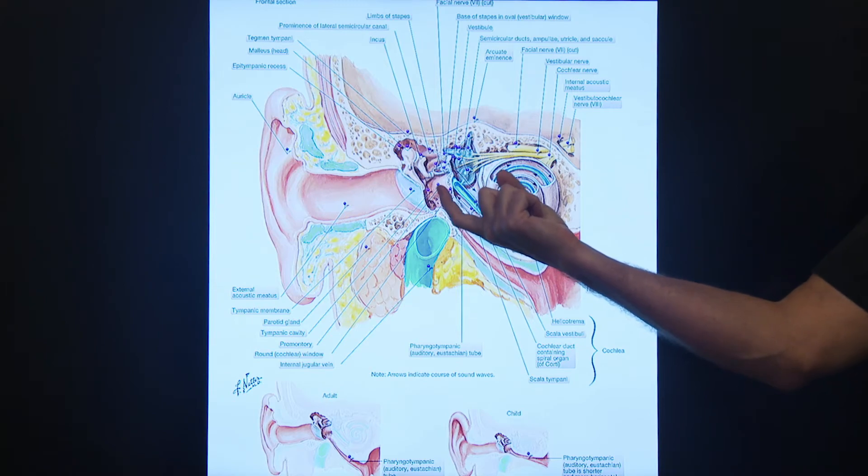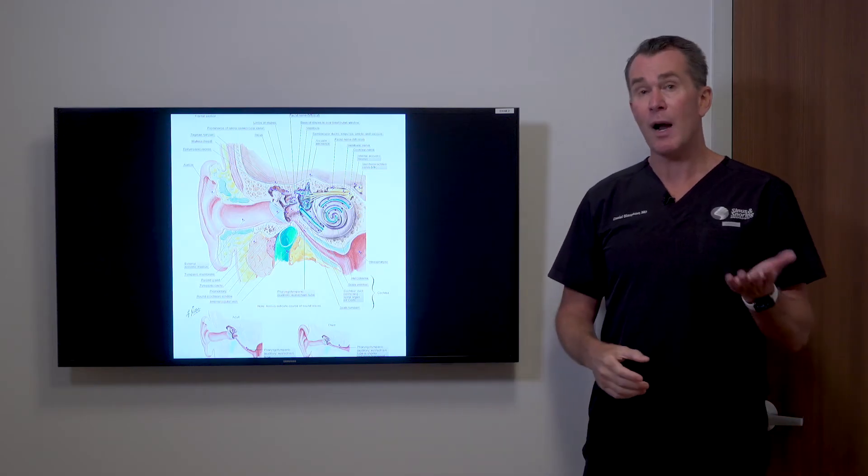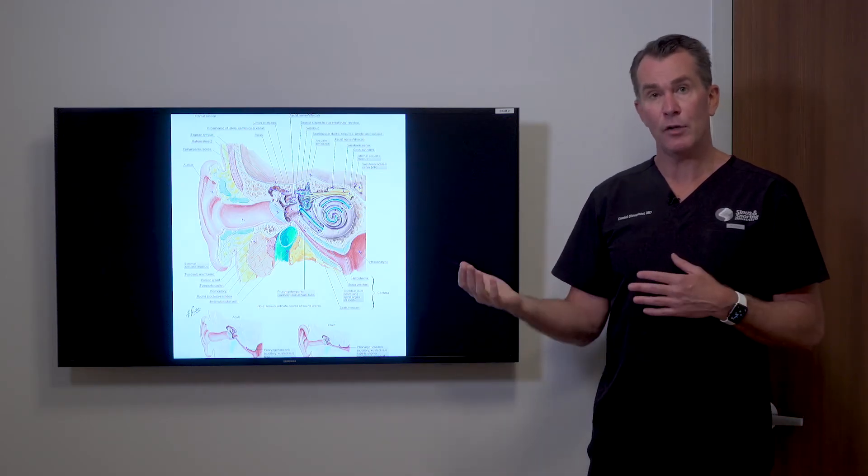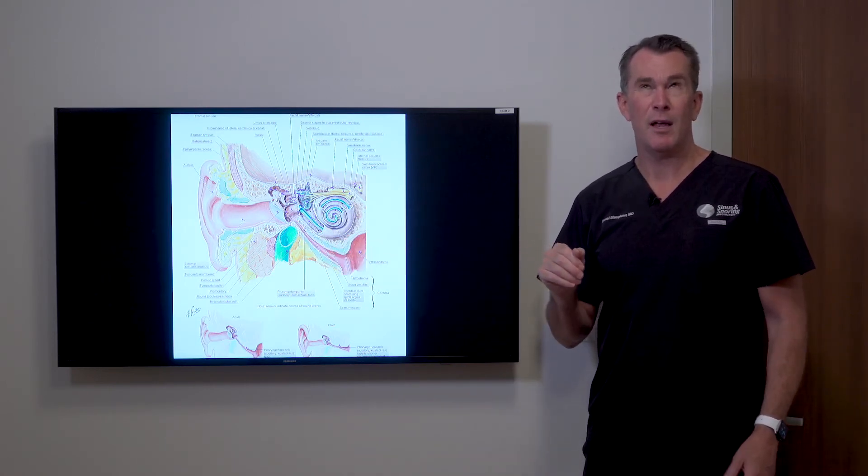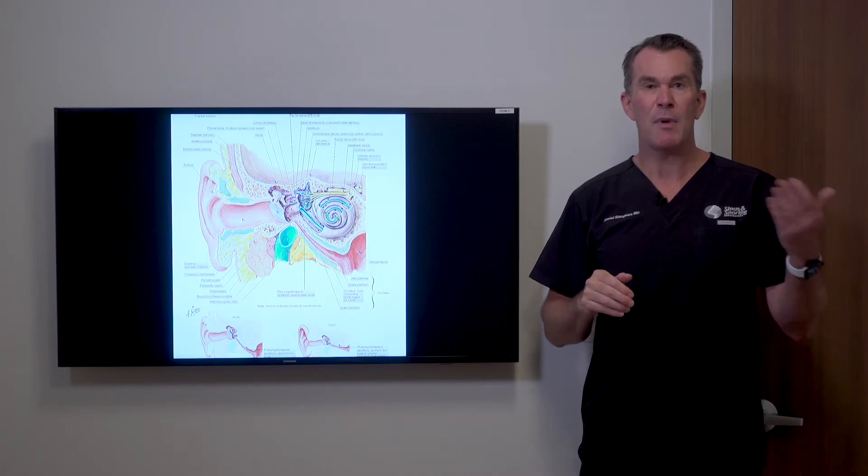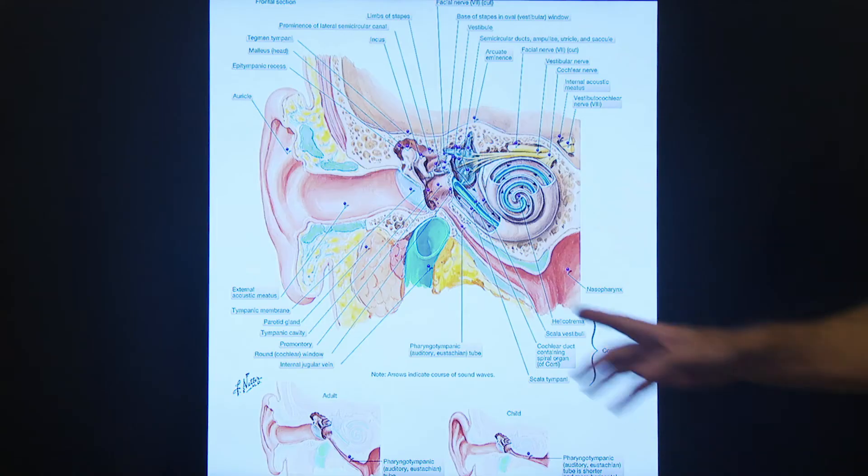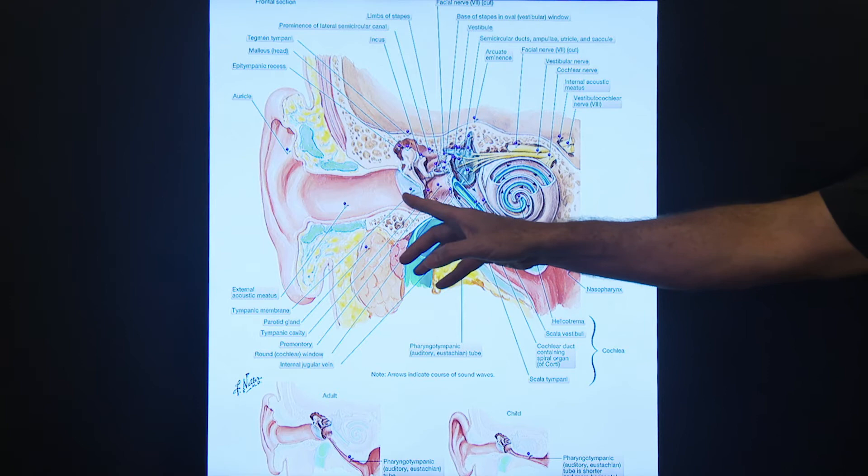Eustachian tube dysfunction can be categorized as primary or secondary. Primary means the tube itself just doesn't work very well, and that's pretty common in nine-month-olds and one-year-olds. That's the reason why we have to put so many tubes in kids like that.